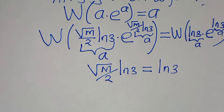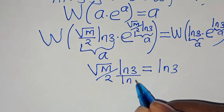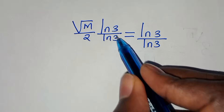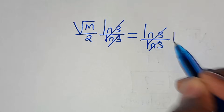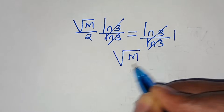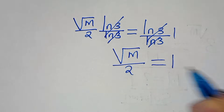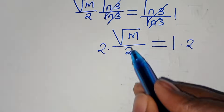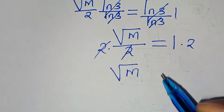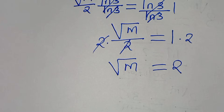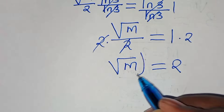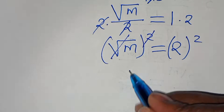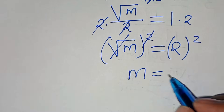We can divide both sides by ln of 3. ln of 3 and ln of 3 simplify, so we have square root of m over 2, equal to 1. Multiplying both sides by 2, we get square root of m equals 2. Now to eliminate the square root sign, let's square both sides, so that m equals 2 squared, which is 4. So the value of m equals 4.